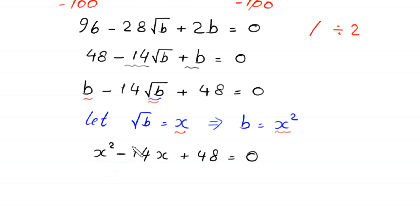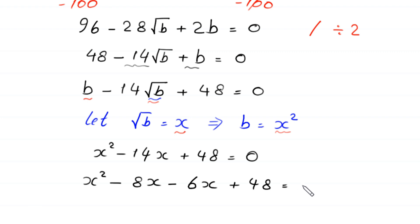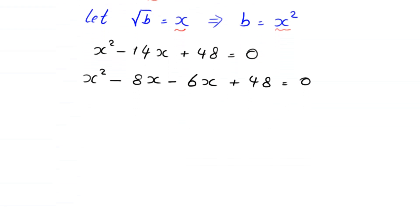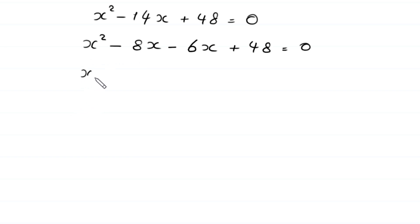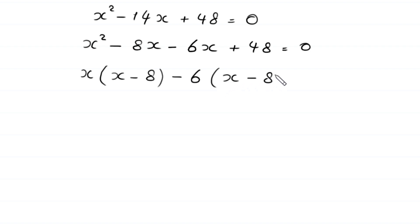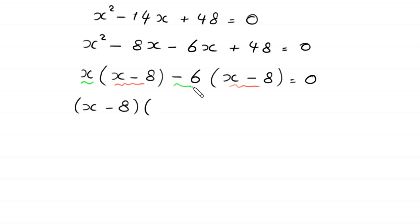This is a quadratic equation and is factorable. We break negative 14x into negative 8x minus 6x, giving x squared minus 8x minus 6x plus 48 equals 0. From the first two terms we factor out x, leaving x minus 8 in the bracket, and from the last two terms we factor out negative 6, leaving x minus 8 in the bracket. So we get x(x minus 8) minus 6(x minus 8) equals 0.